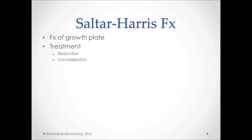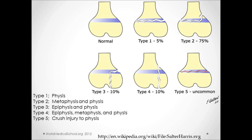Salter-Harris fractures are fractures of the growth plate in children. There are five types. Type 1 is a transverse fracture through the physis, resulting in increased width of the physis; the growth zone is usually not injured and growth disturbance is uncommon. Type 2 is a fracture through the physis and the metaphysis, with the epiphysis not involved. The metaphyseal fragment is sometimes called a Thurston-Holland fragment. This is the most common type of Salter-Harris fracture and rarely results in functional limitations.